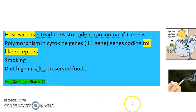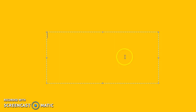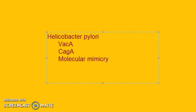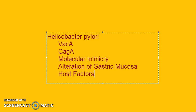Always revise what you learned. H. pylori pathogenesis involves: VacA cytotoxin, CagA gene, molecular mimicry, alteration of gastric mucosa, and host factors. That's what was covered in this video.